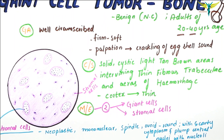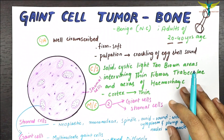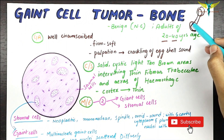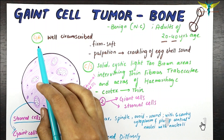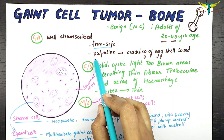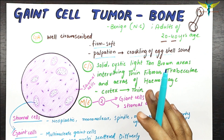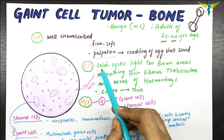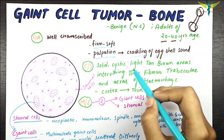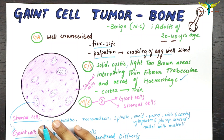To revise once again: the giant cell tumor is a benign, non-cancerous condition most commonly seen in adults of age group 20 to 40 years, which mainly occurs at the end of bones. In the gross appearance, the tumor looks well-circumscribed, firm to soft, and on palpation it produces a sound like the crackling of an eggshell. In cross section, it shows solid and cystic tan and light brown areas with intervening thin fibrous trabeculae, areas of hemorrhage, and a thin cortex.